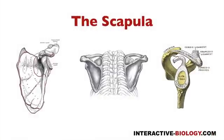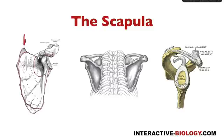Here I'm looking at the scapula — we've looked at this in a previous video. One thing I want to point out is that it kind of has a triangular shape. Like any triangle, it has three angles and three borders. Starting with the angles: here we have the superior angle, then the inferior angle, and then the lateral angle — you can also call this the glenoid angle.